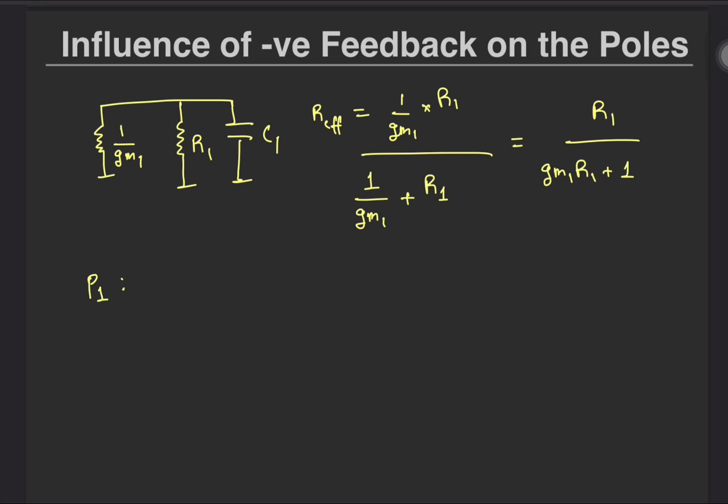That tells us that the pole has been pushed out by a factor of GM1 R1 and now lies at 1 plus GM1 R1 over R1 C1.